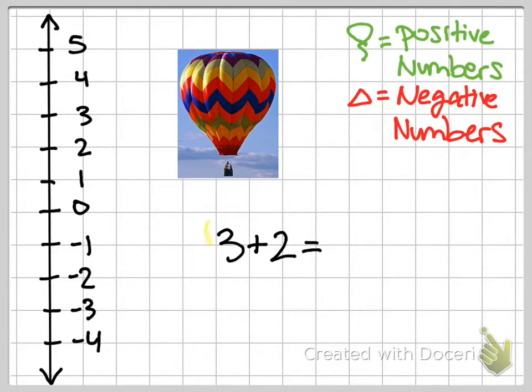So this three is going to tell us that our balloon starts this high off the ground, it's floating in the air. And then the second number tells us whether we're adding weights or balloons. And because it's a positive two, that tells me that I'm adding two balloons to the top of my hot air balloon, which is going to lift my balloon up higher into the ground or higher up into the air.